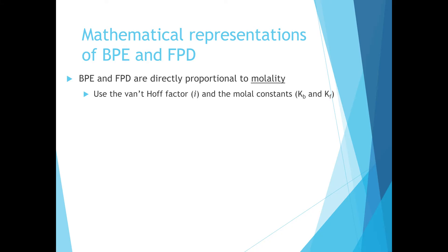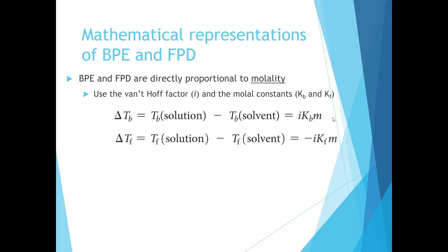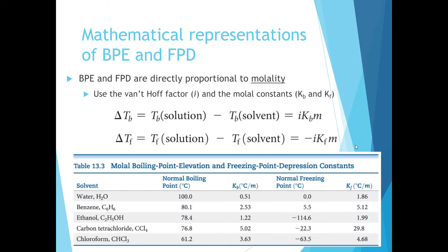The boiling point elevation and the freezing point depression are directly proportional to the molality of the solution. In addition to using molality, we'll use a property called the van't Hoff factor and the molal constants of our pure solvent. To calculate delta Tb, we take the temperature the solution boils at minus the temperature of our solvent, which equals the van't Hoff factor times the molal constant times the molality. For delta Tf, the freezing temperature of our solution minus the freezing point of pure solvent equals the negative van't Hoff factor times the molal constant times molality. Here's an example from your textbook, Table 13.3, listing common solvents, their normal boiling and freezing points, and their molal constants.